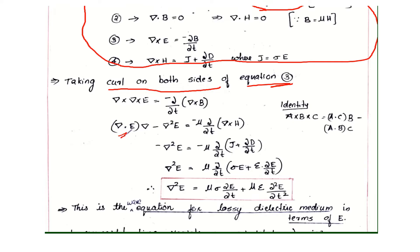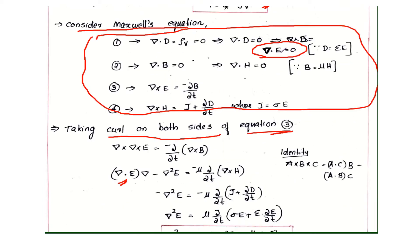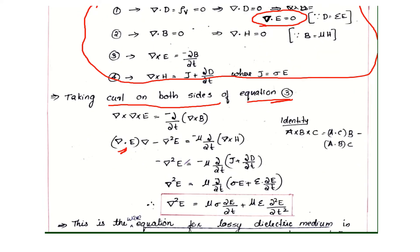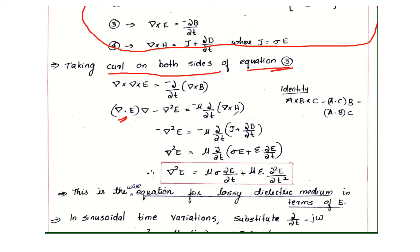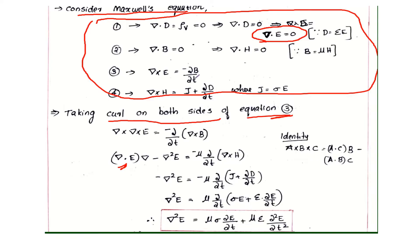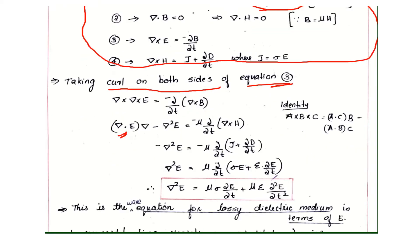We know that del·E equals 0 from the first equation. Therefore, the second term remains: minus del squared E equals minus mu into partial by partial t of J plus partial D by partial t. Since B equals mu H, this becomes minus mu into partial by partial t into del cross H. Substituting del cross H equals J plus partial D by partial t.